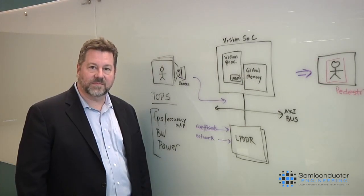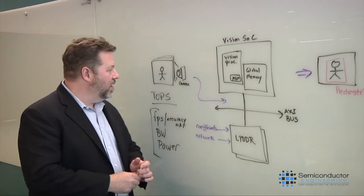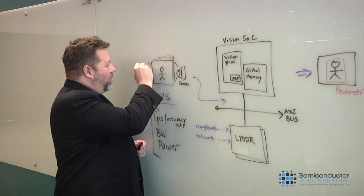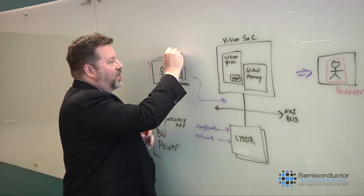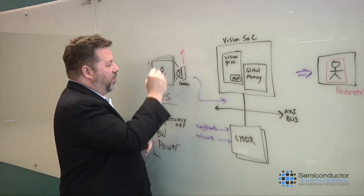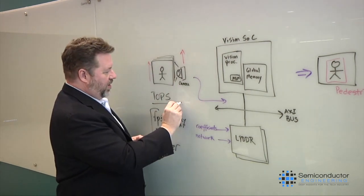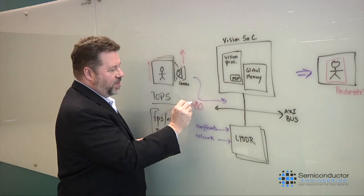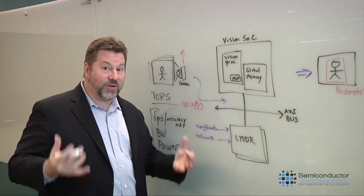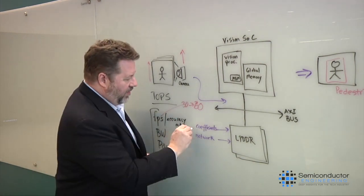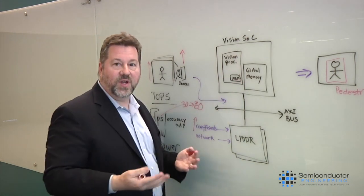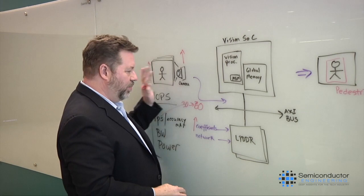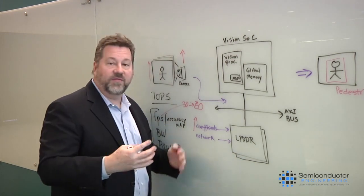So what's really driving the need for more performance? We see, particularly in our automotive customers, the resolution of the images are going up. The number of cameras in a car is going up. The frame rate requirements. Maybe they were at 30 frames per second and now they want to go to 60 frames per second. So that's going up. And as the algorithm complexity goes up, then the amount of coefficients that need to be stored and then therefore transferred goes up. So all of this data and pixels drive the need for more performance.